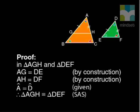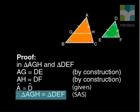The proof starts with congruency. In triangle AGH and triangle DEF, AG equals DE and AH equals DF by construction. Angle A equals angle D, given. Therefore, the two triangles are congruent. The reason: side, angle, side.